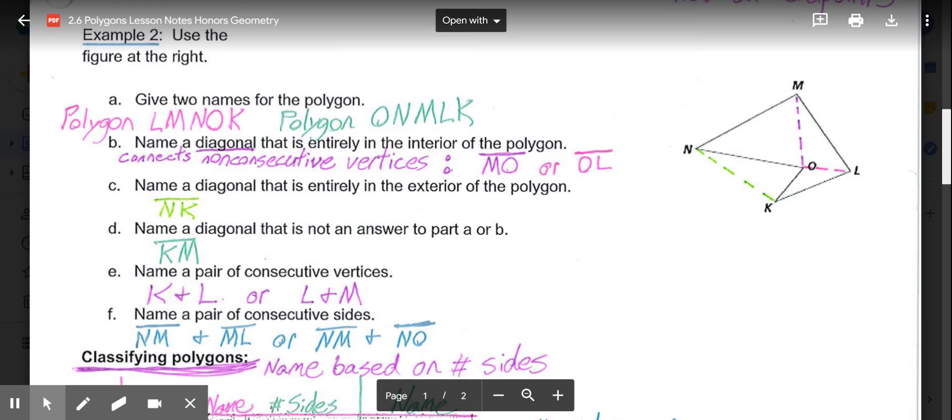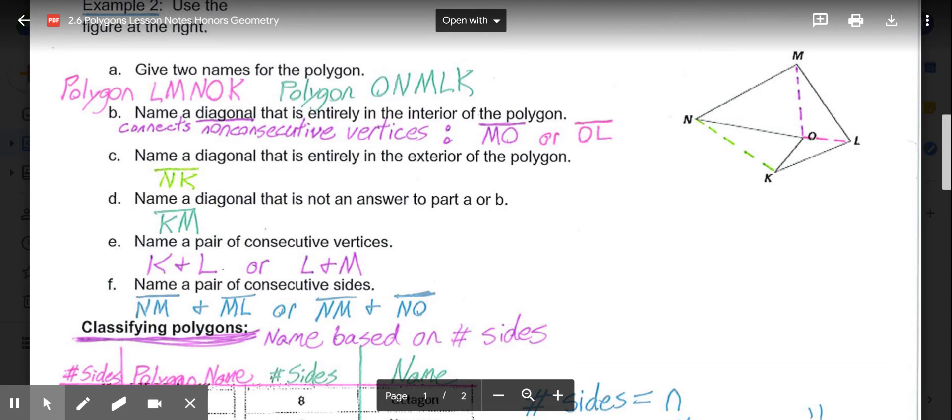A diagonal that's entirely on the exterior would be segment N-K. If we connected N and K, they're not consecutive because of O. So the segment's completely on the exterior. And then, part D, name a diagonal that is not the answer to A or B. We could say diagonal K-M, for example. You could also say N-L, for another example. In E, a pair of consecutive vertices, so K-L would be consecutive. L-M would also be consecutive, for two different examples. And a pair of consecutive sides would be segment N-M and M-L, or we could say N-M and N-O.